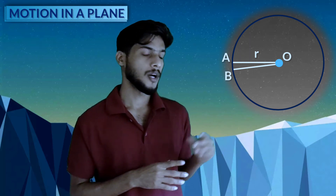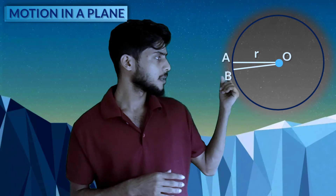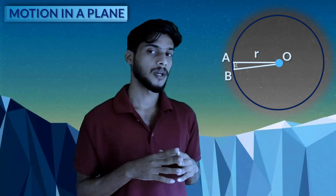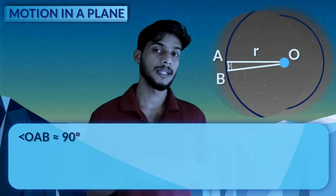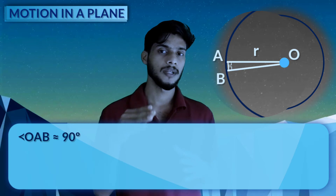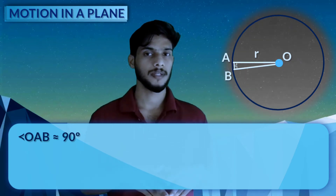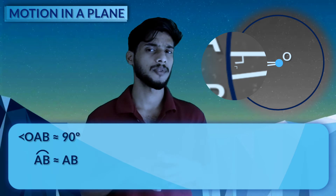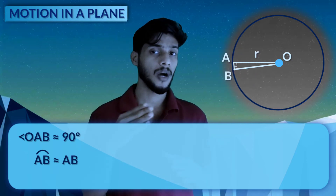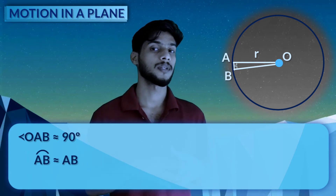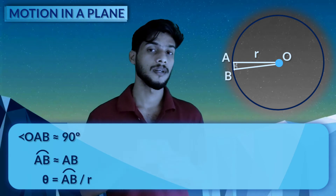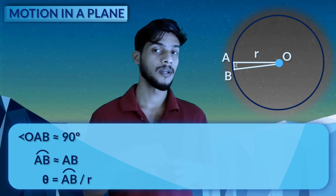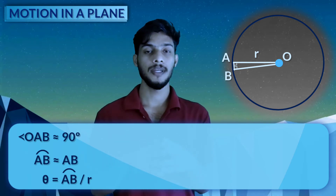We have a circle with a 0.5 portion and angle 1.5. Angle OAB is 90 degrees, and angle YAB is 90 degrees. Now theta is defined as the arc length of AB divided by radius R, so theta equals arc AB divided by R.